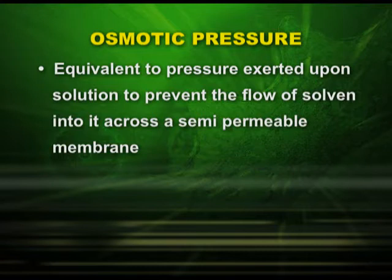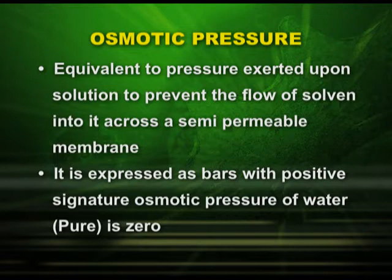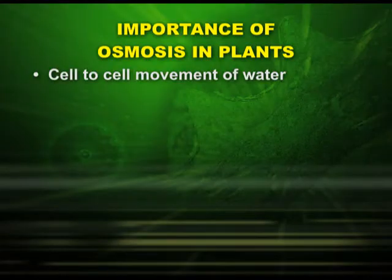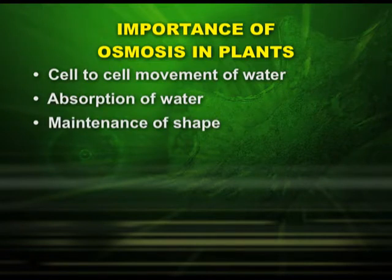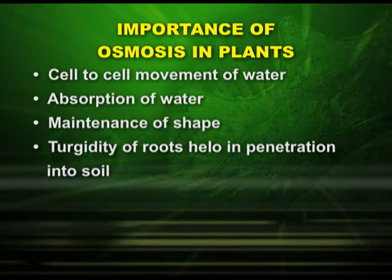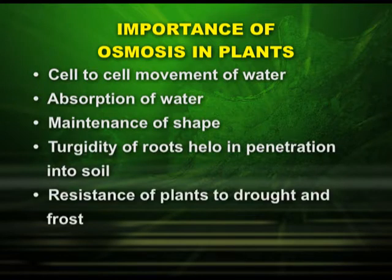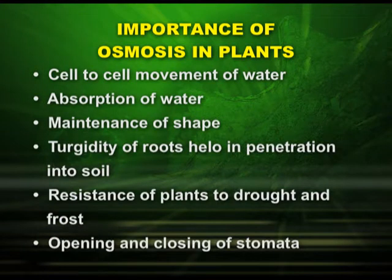Osmotic pressure is equivalent to the pressure exerted upon a solution to prevent the flow of solvent into it across a semipermeable membrane. It is expressed in bars with a positive sign, and the osmotic pressure of pure water is 0. The importance of osmosis in plants includes: cell-to-cell movement of water, absorption of water, maintenance of shape of plant cells, turgidity of roots for penetration into soil, resistance of plants to drought and frost, and opening and closing of stomata.